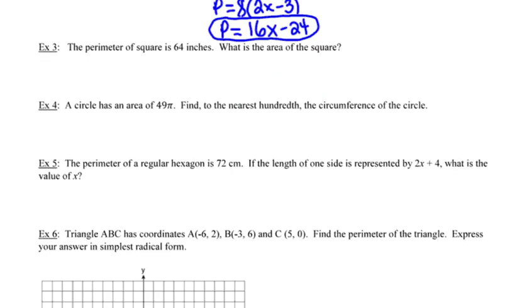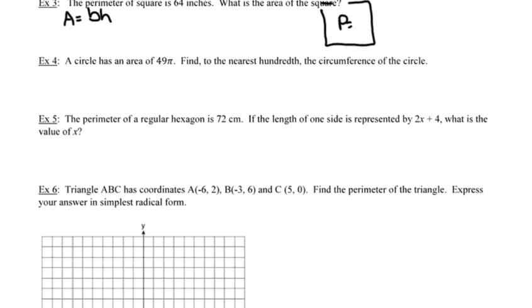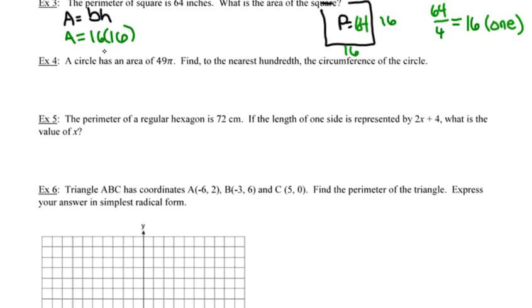Number 3 tells us the perimeter of a square is 64 inches, and we need to find the area. To find area, I need the side length, so I work backwards from the perimeter. Dividing 64 by 4 gives a side length of 16. Since all sides of a square are equal, I plug that into the area formula: 16 times 16 gives an area of 256 square inches.